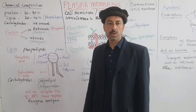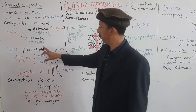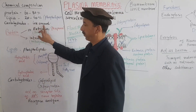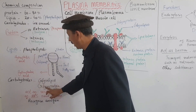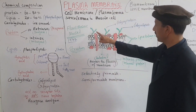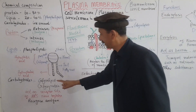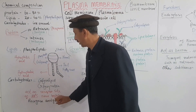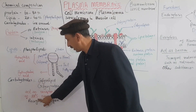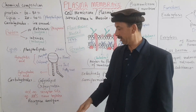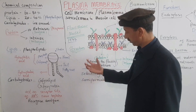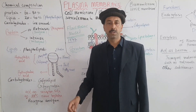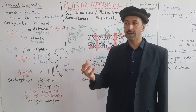Carbohydrates are found in the form of glycoproteins and glycolipids. These glycoproteins act as antigens, helping the immune system recognize viruses, bacteria, or other pathogens.